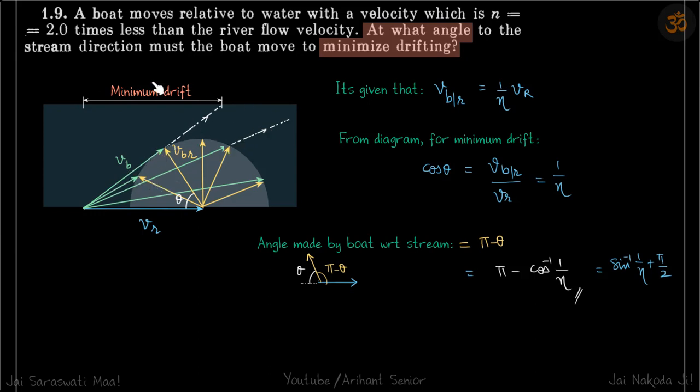In this case, for example, as I have shown, if the boat keeps its velocity with respect to river in this direction, then its drift is going to be something like this.